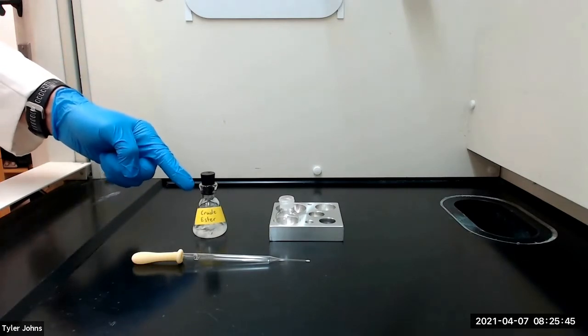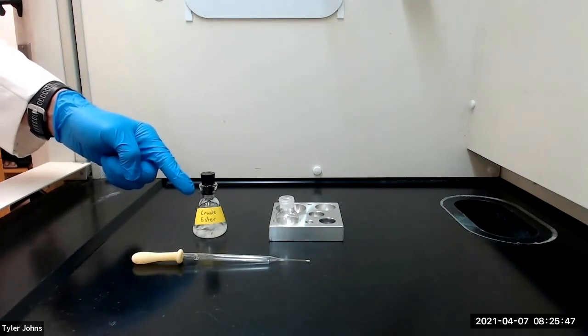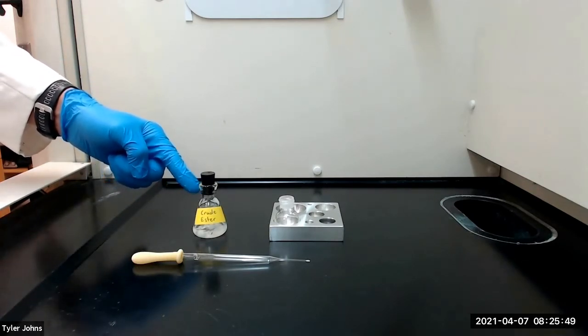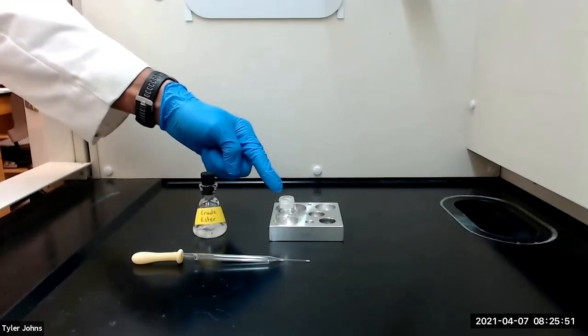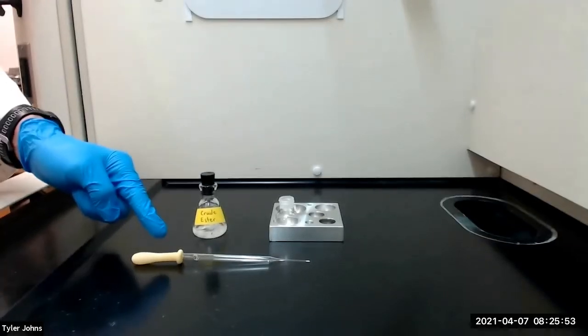After drying the crude ester over anhydrous sodium sulfate, we will next transfer the ester to a 10 milliliter round bottom flask using a filter tip pipette.